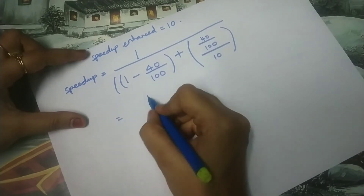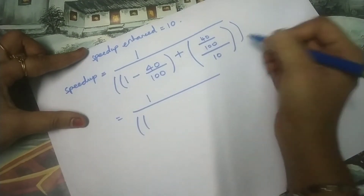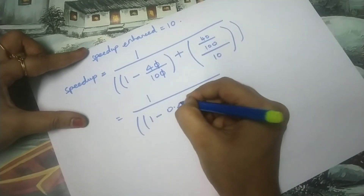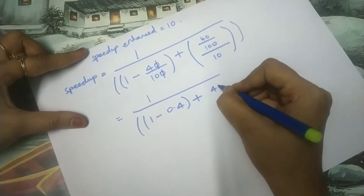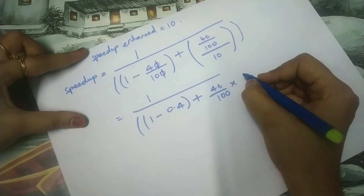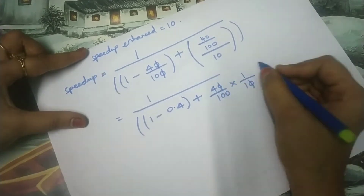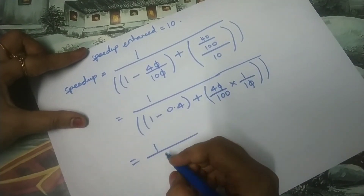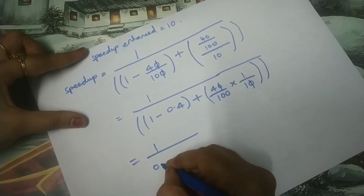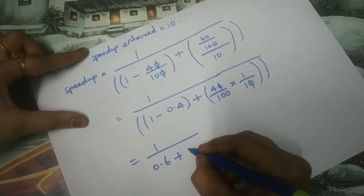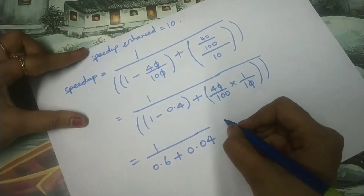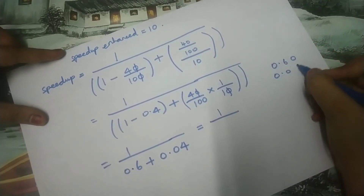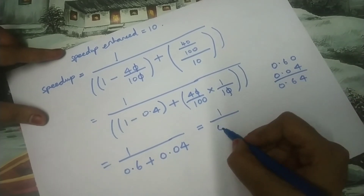This can be written as 1 divided by (1 minus 0.4) plus (40 by 100 multiplied by 1 by 10), which gives 4 by 100. So we get 1 divided by 0.6 plus 0.04, which equals 1 divided by 0.64.